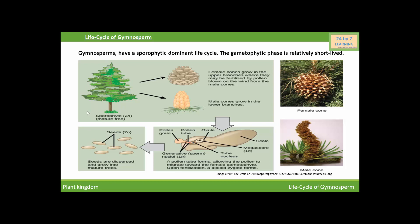The main plant body of a gymnosperm is represented by a sporophyte. This is the sporophyte. Typically, a sporophyte has a stem, roots, and leaves, and bears the reproductive structure. A sporophyte develops from the diploid zygote after the process of fertilization.